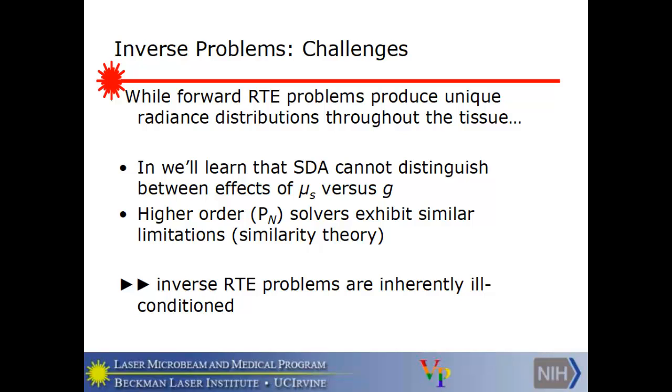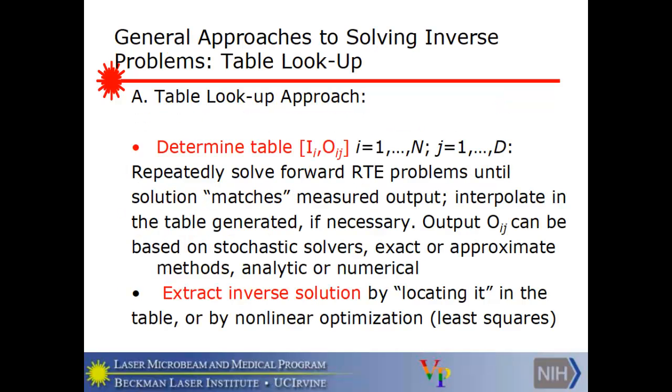Of course the challenges are by now familiar. We don't expect a necessarily unique solution for the inverse problem. And we'll also find out when we study a little bit more that standard diffusion cannot distinguish between the effects of the scattering cross-section and G, the first anisotropy. They're coupled, cemented together in the standard diffusion approximation through mu s prime, the product of the two. And higher order solvers, pn, which get the first n angular moments, exhibit a similar limitation. There's a similarity theory which says that you can get up to n separations, but the next ones are coupled together and you can't separate them. And so inverse problems we know are inherently very ill conditioned.